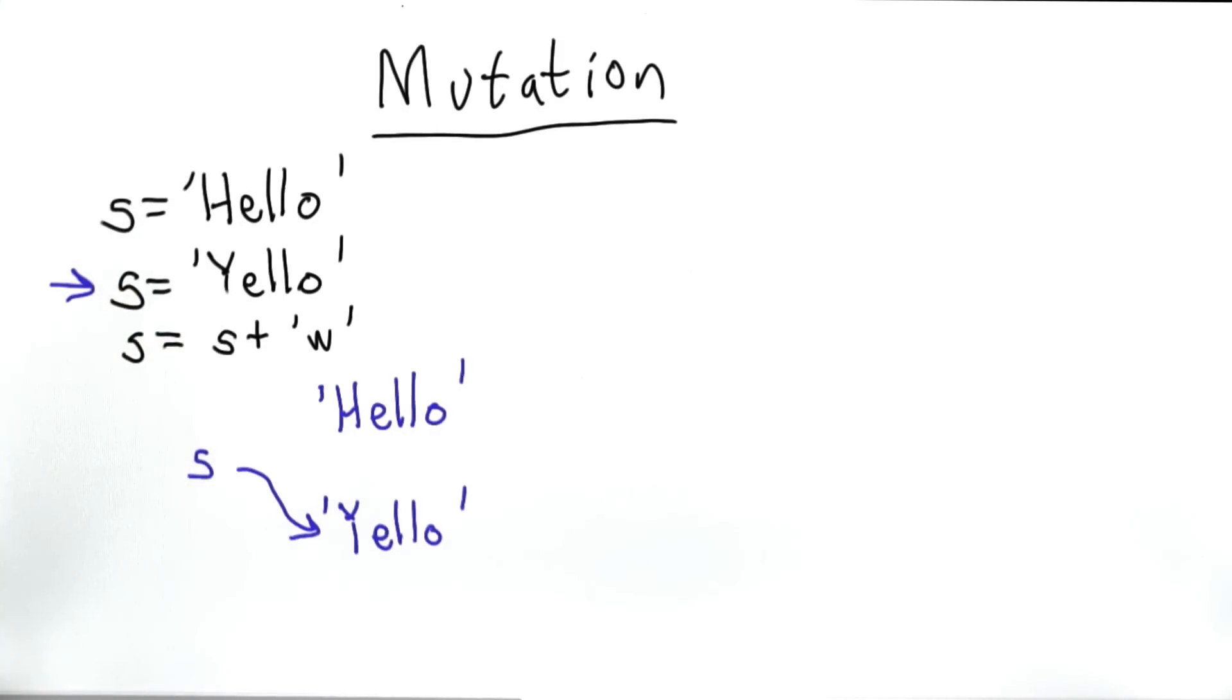With strings, we can also use the plus operator to concatenate strings. It looks like this is changing the value of the string. You might think that the result of this is, well, now the string that was previously yellow spelled wrong is now yellow spelled with the w at the end, but that's not actually what happens.